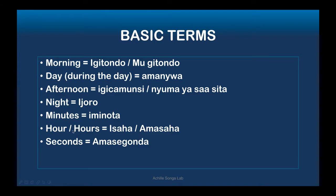For 'hour' in Kinyarwanda, we say 'isaha' for a single hour, and in the plural — hours — we say 'amasaha.' So: hour is 'isaha,' hours is 'amasaha.'